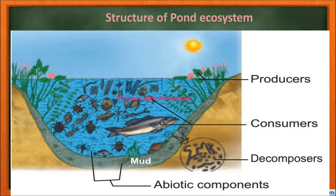Secondary consumers are water beetles and frogs. Tertiary consumers include duck, crane, and some top carnivores like large fish, hawk, and man. Decomposers are microorganisms that help recycle nutrients in the ecosystem between the biotic and abiotic components — for example, bacteria and fungi — which help decompose dead organic matter and waste materials settling in the pond.